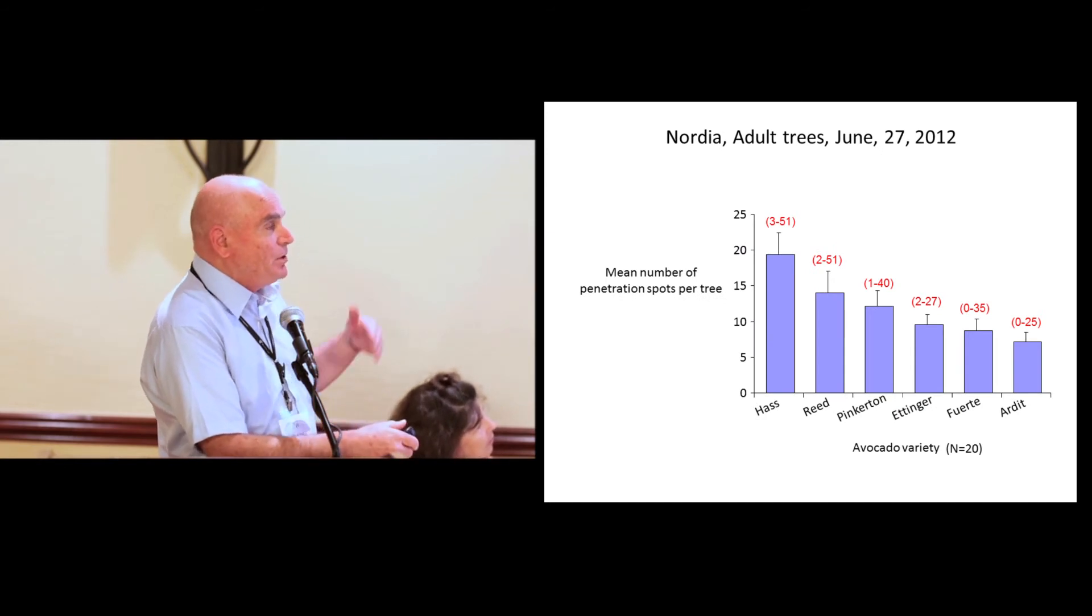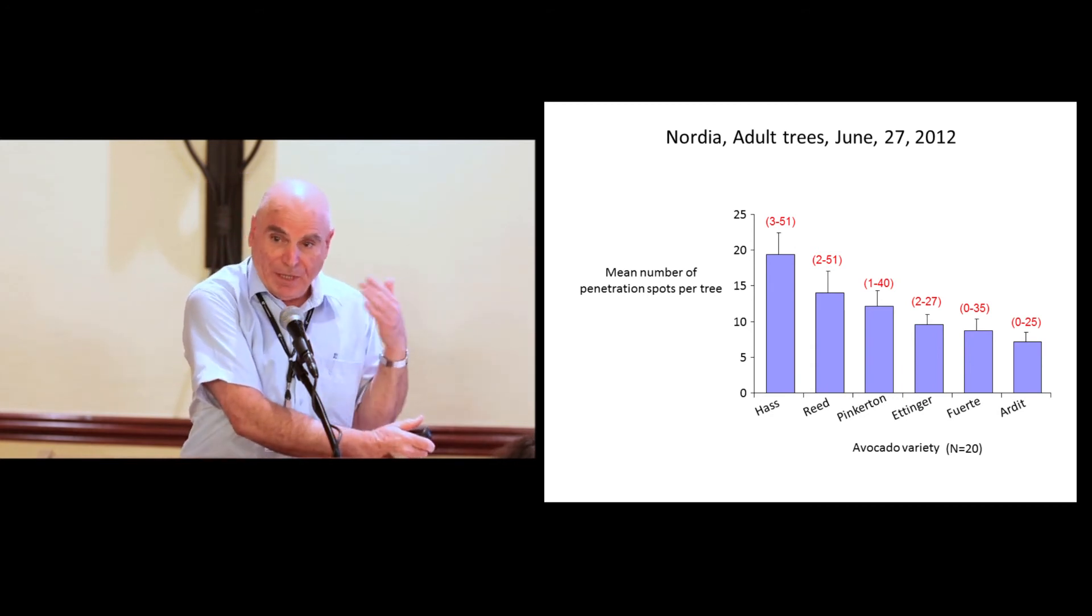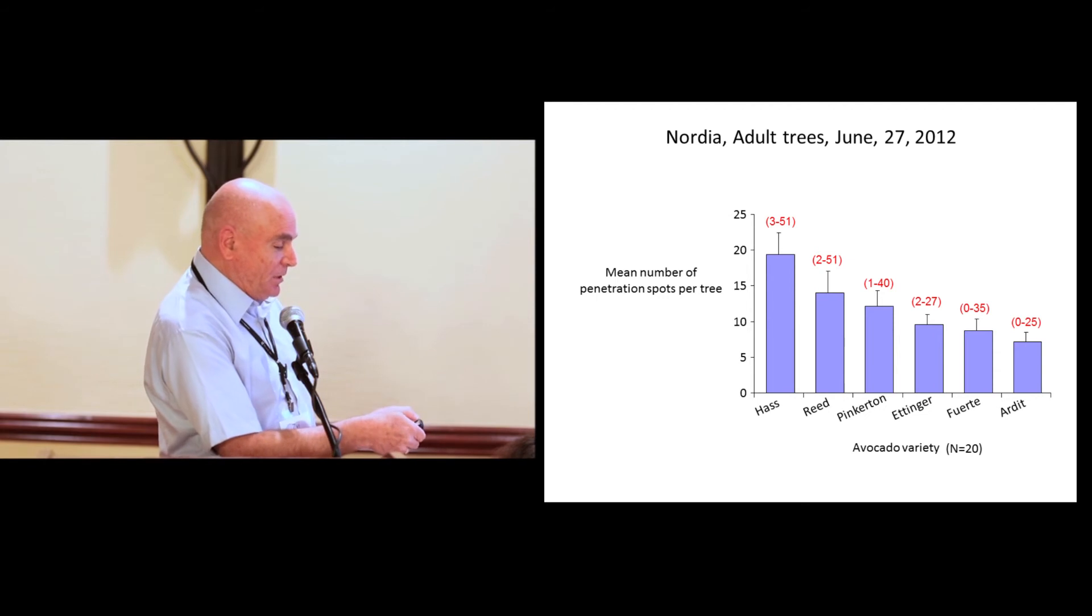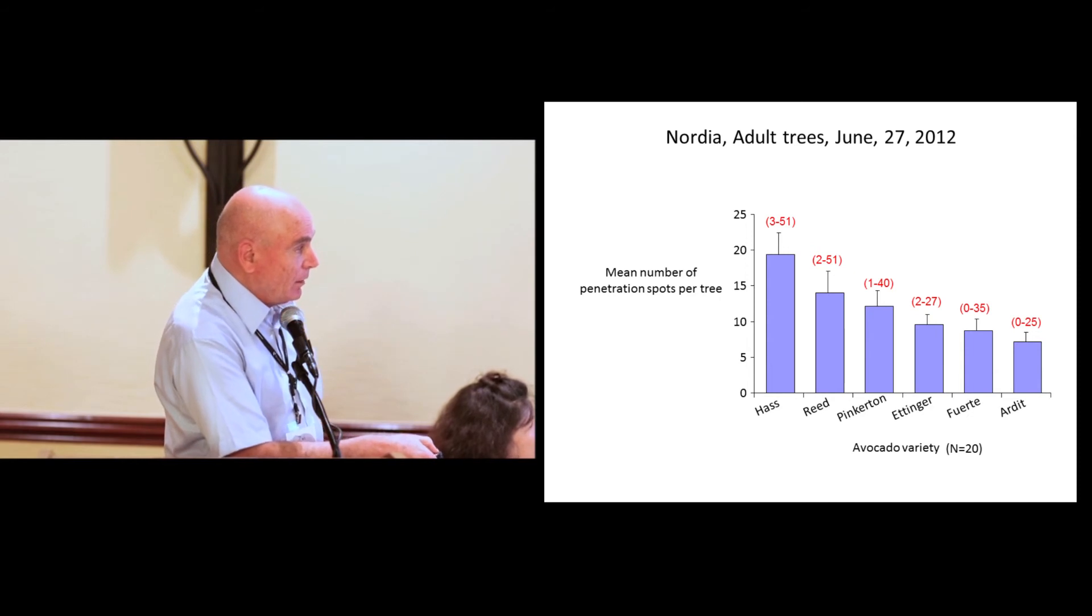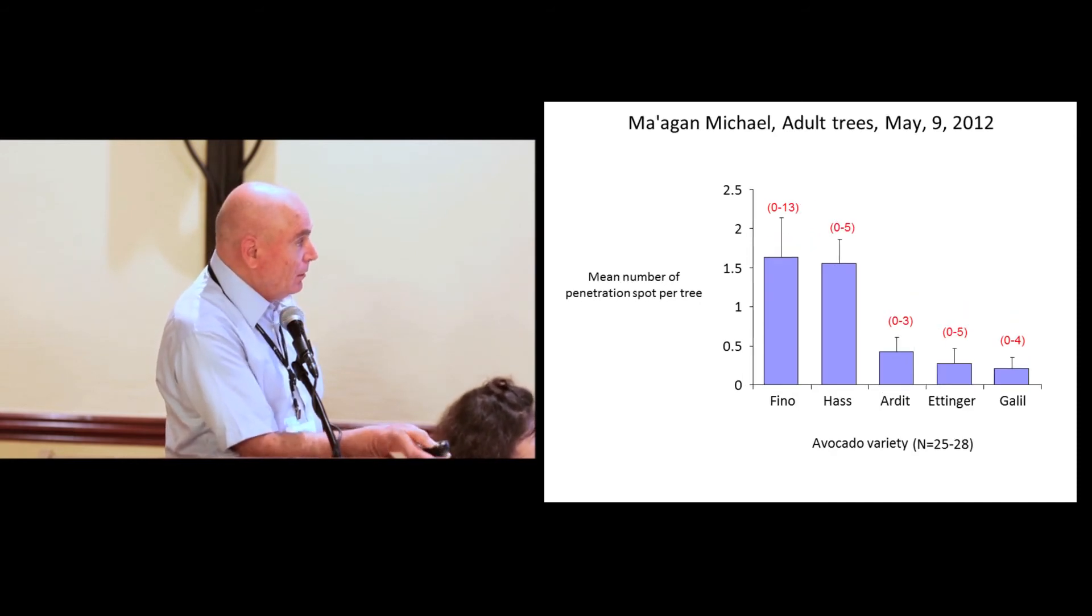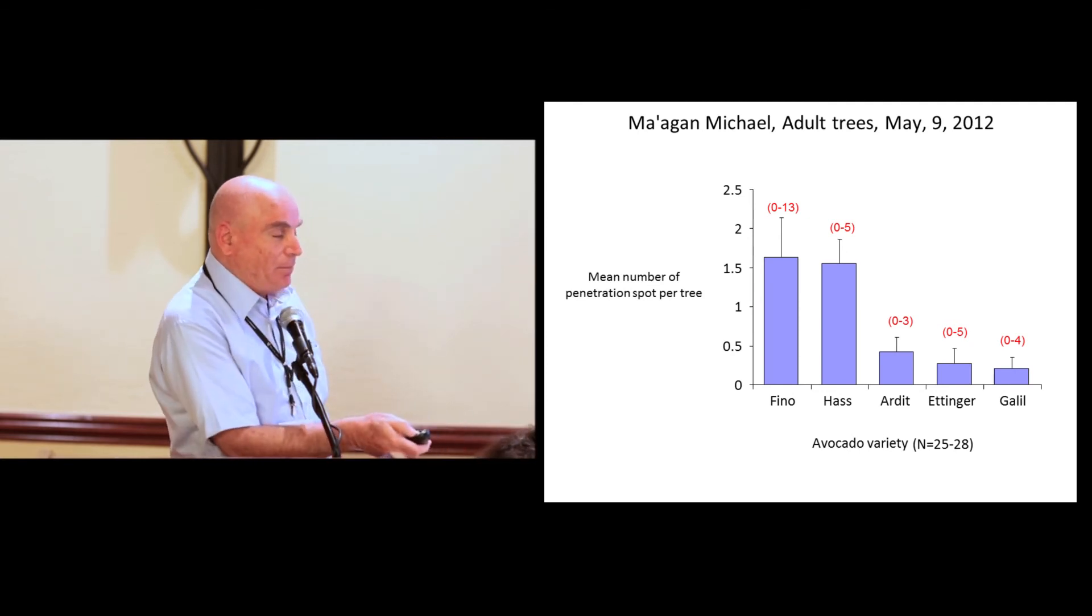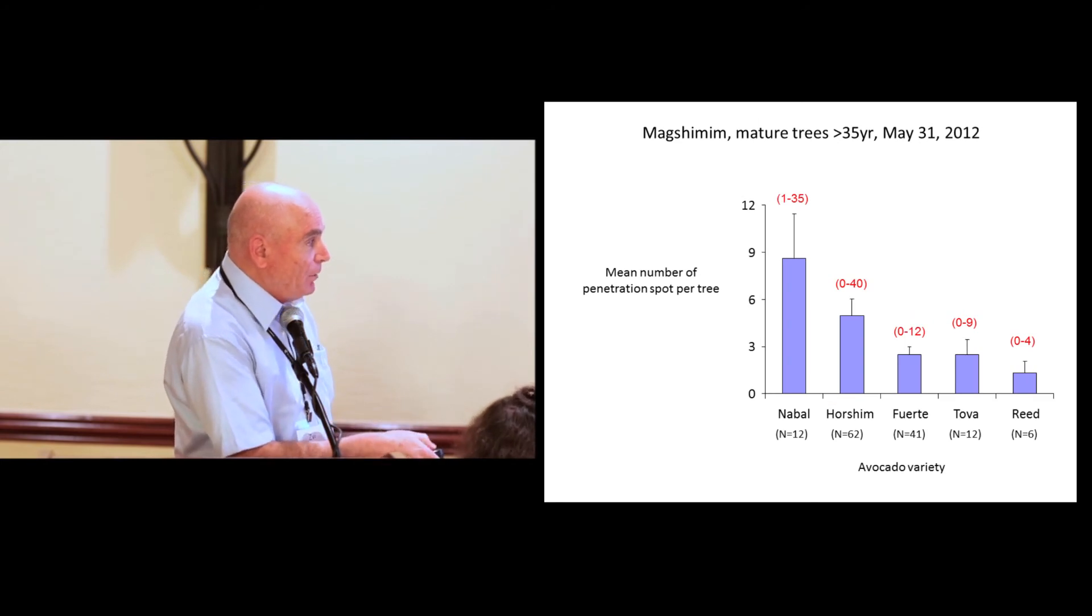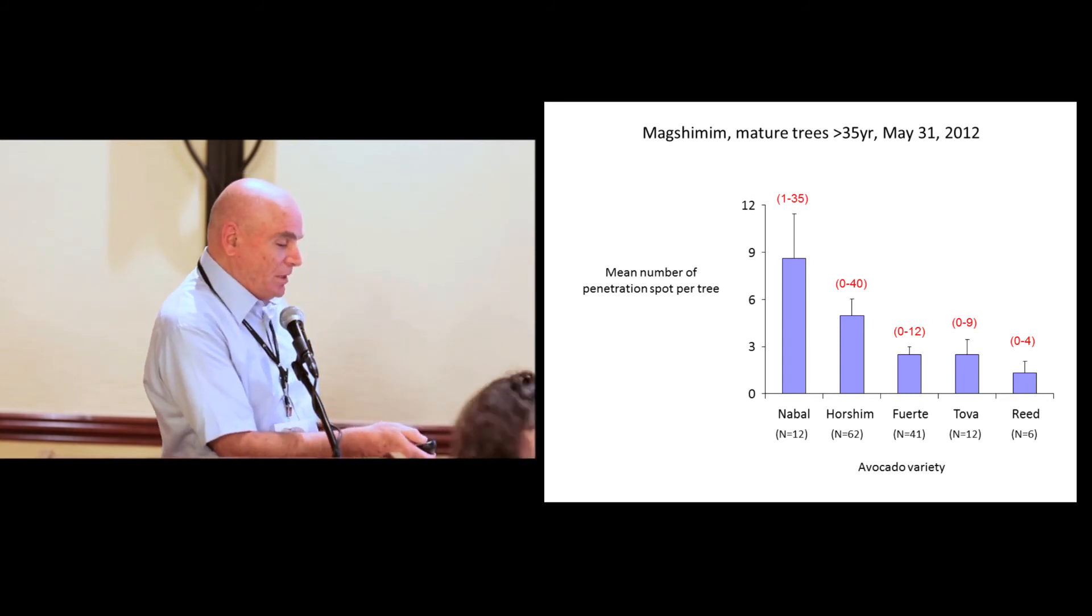The picture repeats itself. We measure the susceptibility or the relative susceptibility of different varieties by comparing the density of penetration spots, which you know by now, it's not too complicated. And in most cases, you see that the Hass here is the most susceptible. Ettinger is less susceptible. Again, another plantation, Pinkerton and Hass are the most susceptible. Others are less susceptible. Another example of mature trees, in this case, Pazbanabal, which I suppose you have it here, seems to be more susceptible than the others.